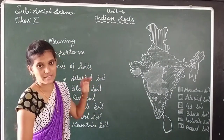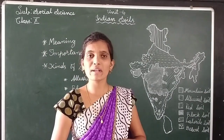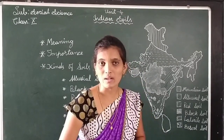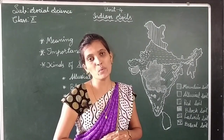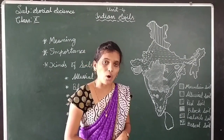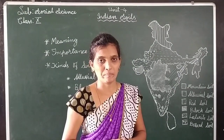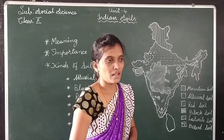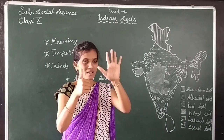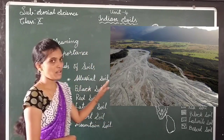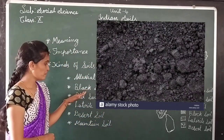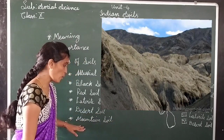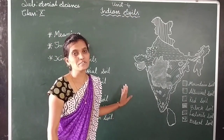Next topic: kinds of soils. Soils of India can be classified into six main types. Indian soils are not equally distributed across the country, because some factors influence soils. The factors are natural vegetation and climate. The six types are: alluvial soil, black soil, red soil, laterite soil, desert soil and mountain soil.